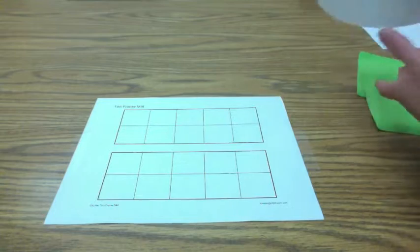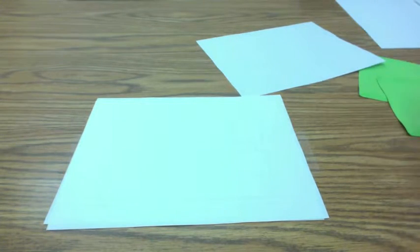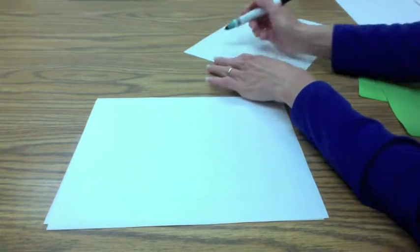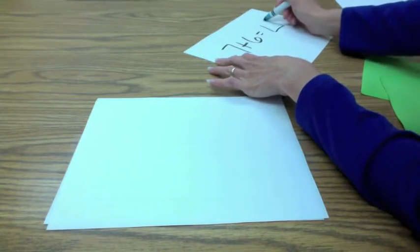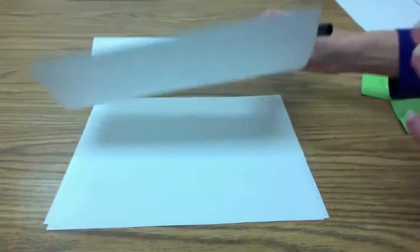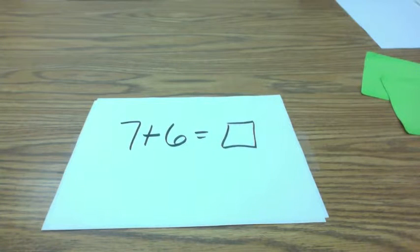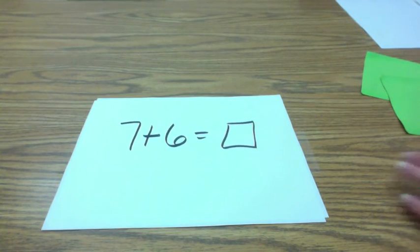I'm just going to pretend that this double 10 frame isn't even here. And I'm going to say, what if I asked you to solve, for example, 7 plus 6? 13. And work through that for us, please. It's 6 plus 6 is 12, so 1 more would be 13. And 1 more makes 13. Good.